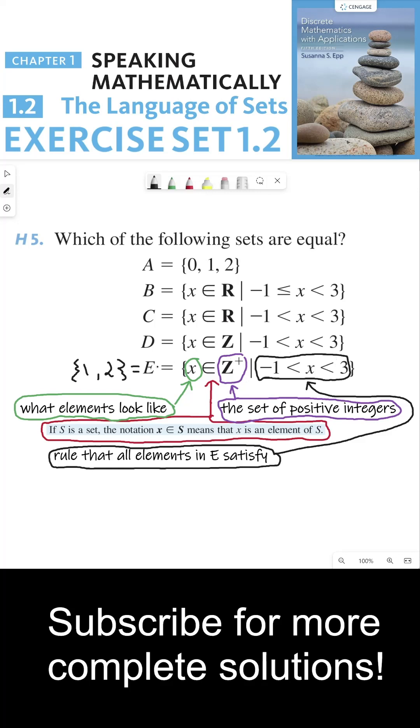So set E is really just the same as the set containing the two objects 1 and 2. These are both positive integers. They're both between negative 1 and 3, and they're the only positive integers that satisfy this rule. So there are only two objects in E. So now that we've broken down the set builder notation, let's go back to the question: which of the following sets are equal?